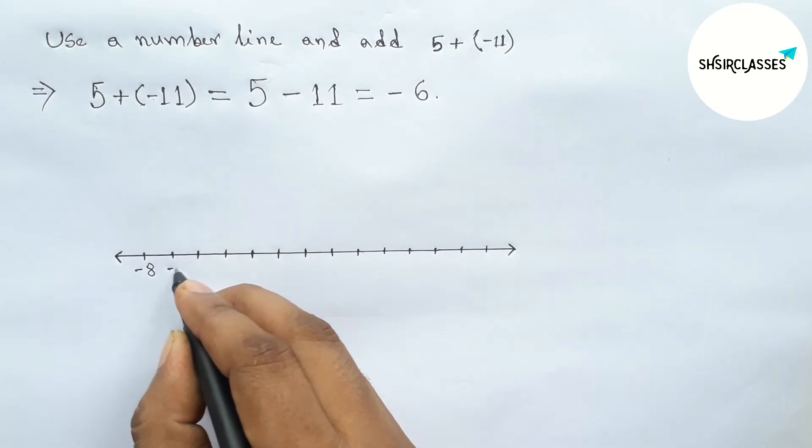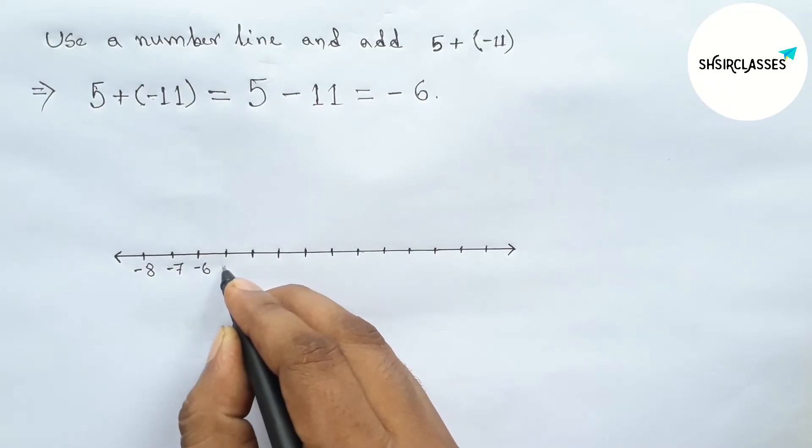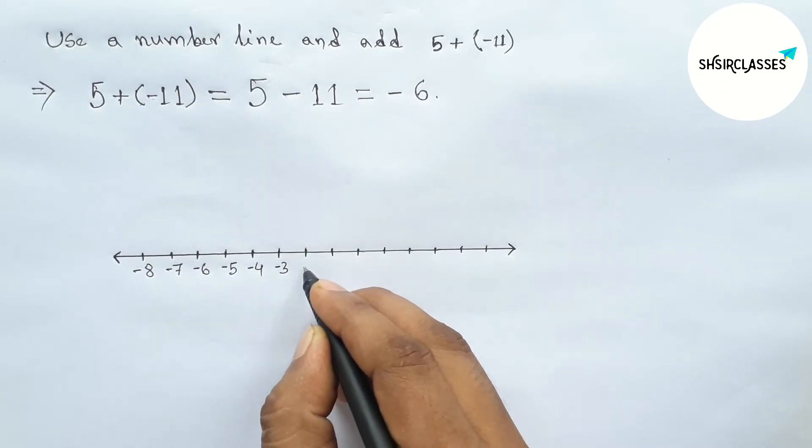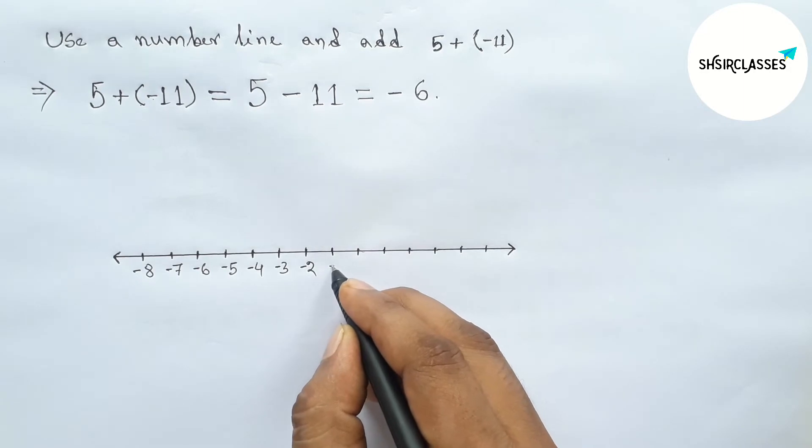So now taking here first minus 8, then minus 7, minus 6, minus 5, minus 4, minus 3, minus 2, minus 1, 0, here 1, 2, 3, 4, 5, and 6.